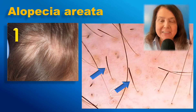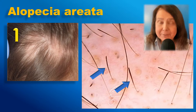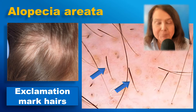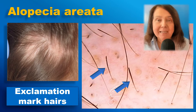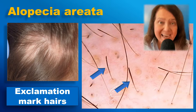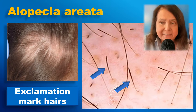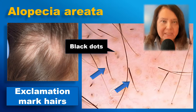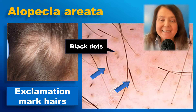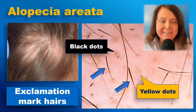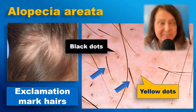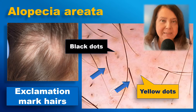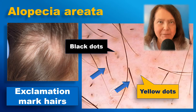Yes, this is alopecia areata. The trichoscopy image is very typical for alopecia areata with multiple exclamation mark hairs. They are also a manifestation of the active phase of the disease. There are also some black dots, which manifest a residue of a hair shaft in the hair follicle, and some yellow dots, which are a manifestation of empty hair follicles filled with sebum and sometimes keratinous material.